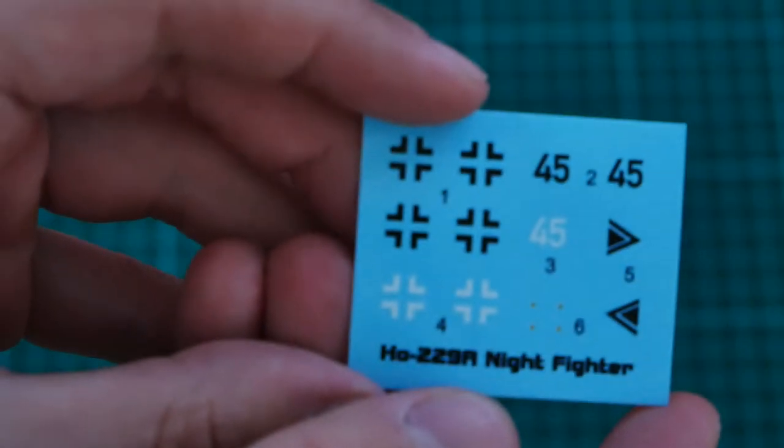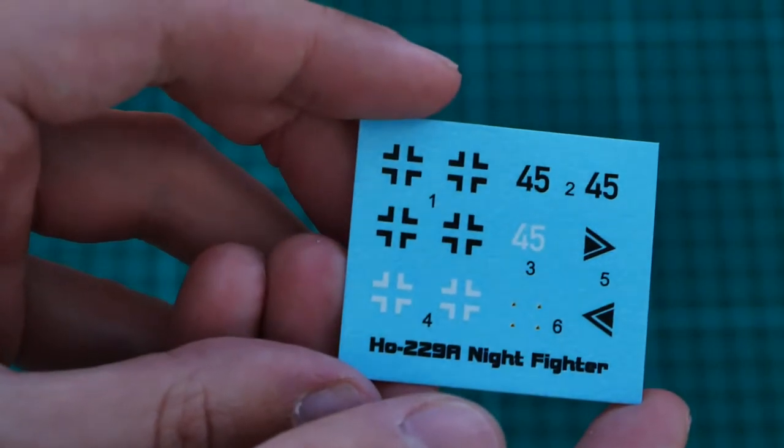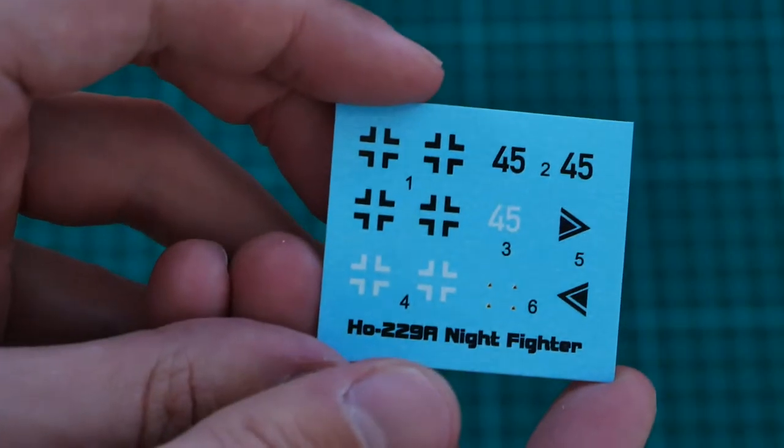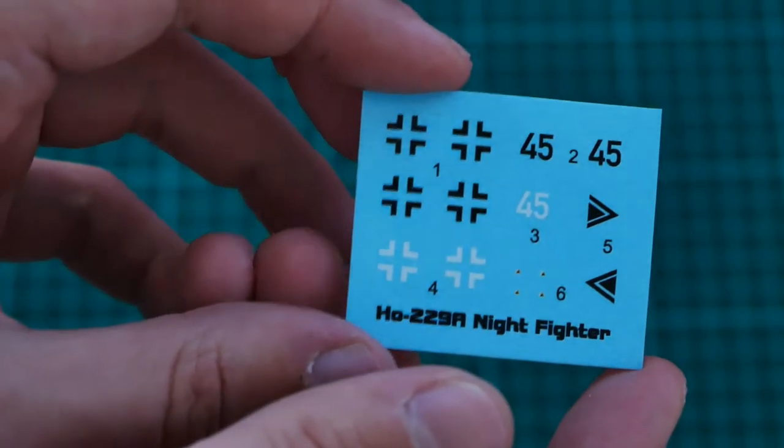Okay, so first is this decal sheet. As you can see, it looks really good. I will remind you that we have only two marking options here, so you will be able to cope with those symbols for two marking options.